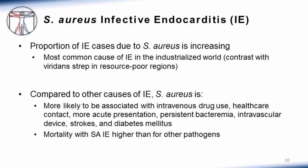There is a separate talk on infective endocarditis, so I'll just make a couple of comments as they relate specifically to staph aureus. Worldwide, the proportion of endocarditis cases due to staph aureus is increasing, and it's the most common cause of endocarditis in the industrialized world, where more patients are receiving invasive procedures, prostheses, or organ transplants. By contrast, in more resource-poor regions — such as Kenya where I spend time clinically — rheumatic heart disease is the most common predisposing factor and patients are more likely to be infected with viridans group streptococci rather than staph aureus.